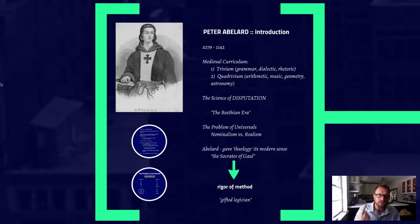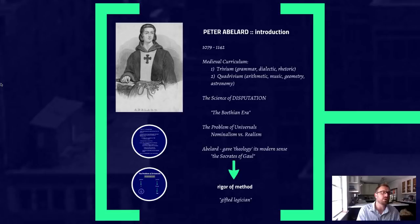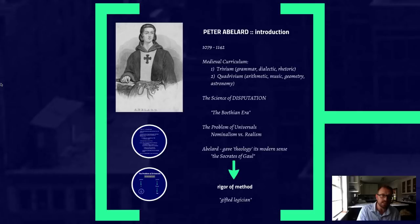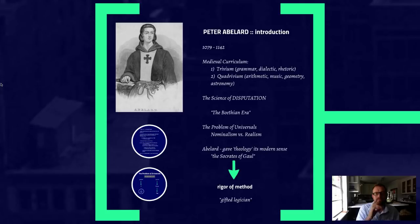In disputation, one student would argue a thesis — making a claim and giving arguments for it, usually about the nature of God or some philosophical or theological problem. Then everyone else in the room would offer counter-arguments and objections. Then Abelard, or whoever was in the middle, would respond and refute each objection. It's a great way to practice critical thinking skills. We don't employ it much today, but it's very systematic, allowing deep probing of a subject.